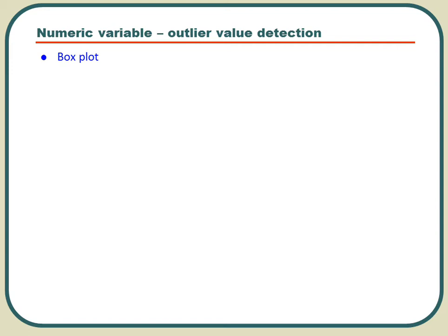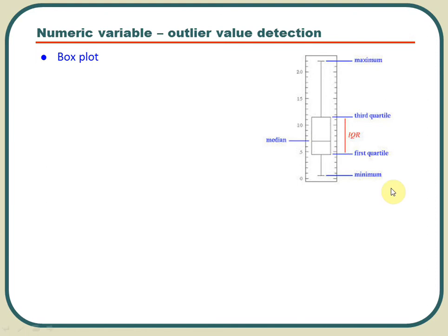Boxplot is available in SAS or any other statistical package and it will produce a chart like this, where the lower part of the box is the first quartile, the 25th percentile value, and the upper part is the third quartile, the value where 75 percent of values are less than or equal to this particular value.